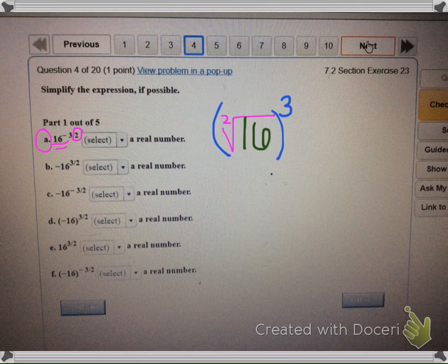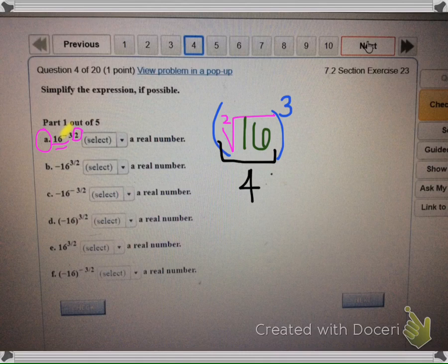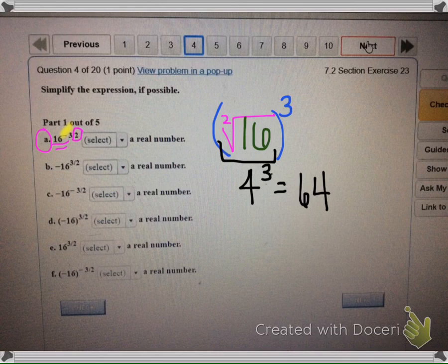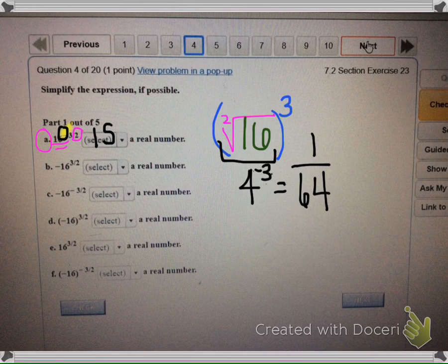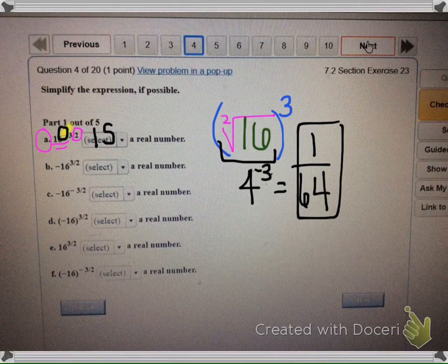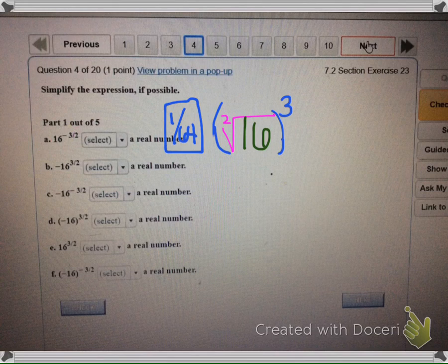Because it's negative 3 here, all that means is that the answer is going to move to the denominator. So let's go ahead and see what this would equal. The square root of 16 is 4, and then 4 to the third power is 64. But because it was negative, it means it would move to the denominator, so that is a real number.